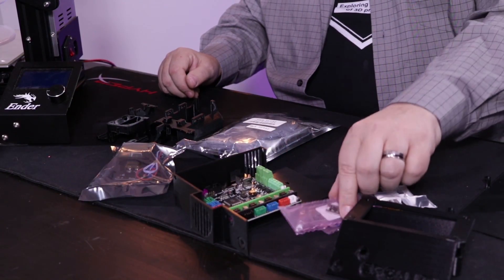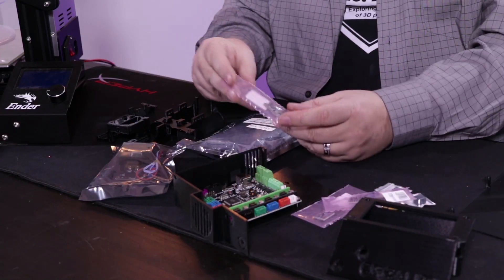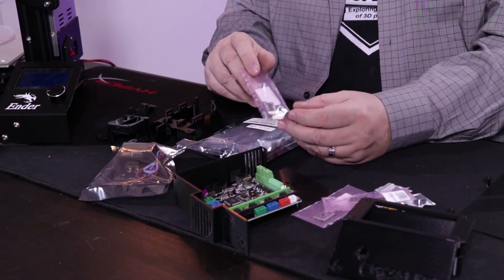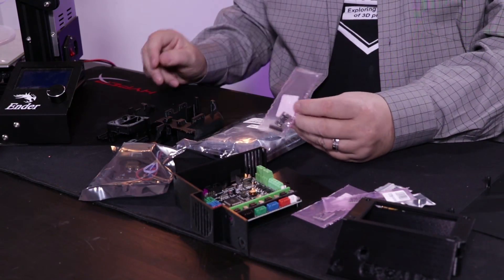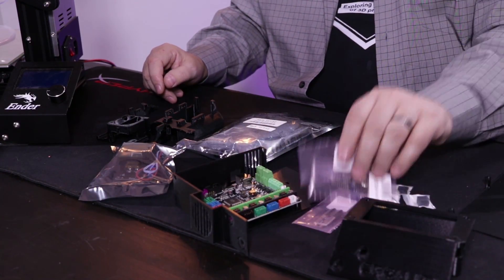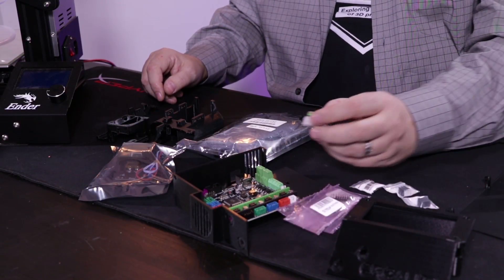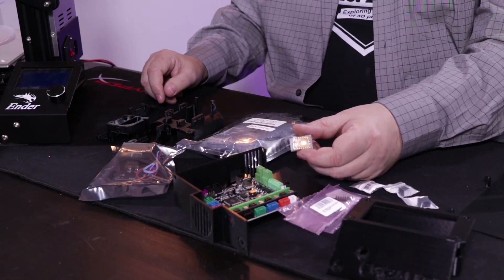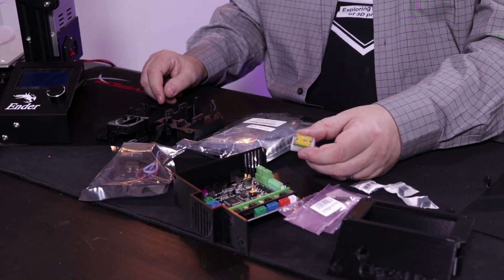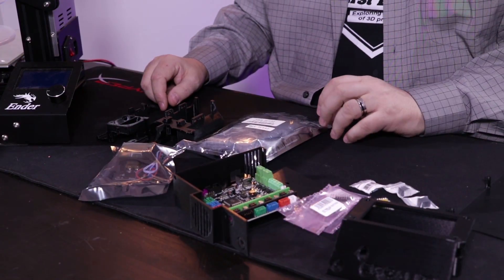Now the other thing that we are going to populate this board with is 2208 stepper drivers. And we have to do some soldering on this, so we're going to show you how to do that as well. And we'll get these onto the board. We're going to use these on the X, Y, and Z. And then we are going to use an LV8729 stepper driver for our extruder. And I'll explain why we're going to do that when we get to that point.